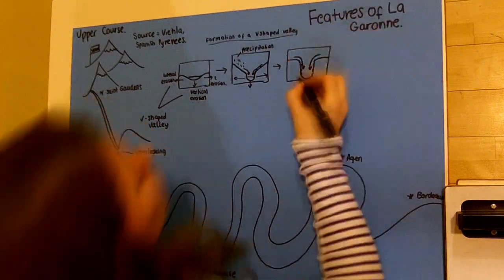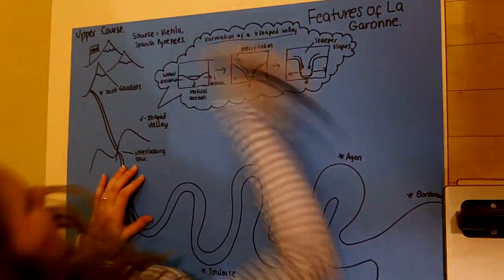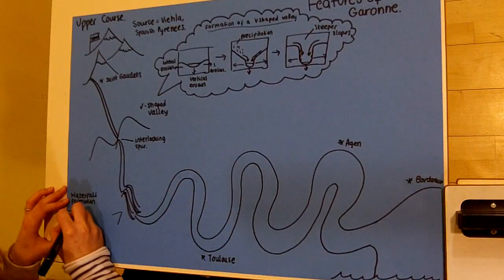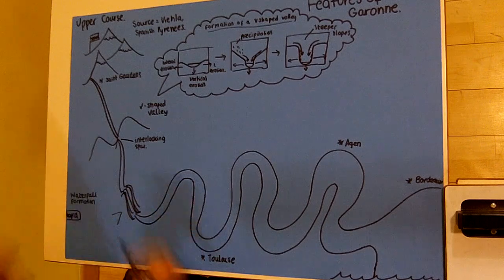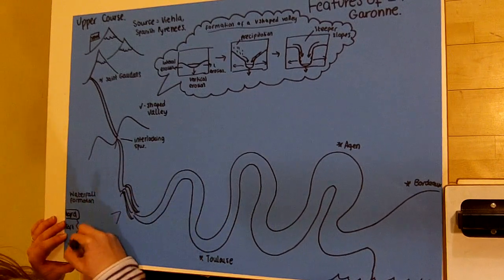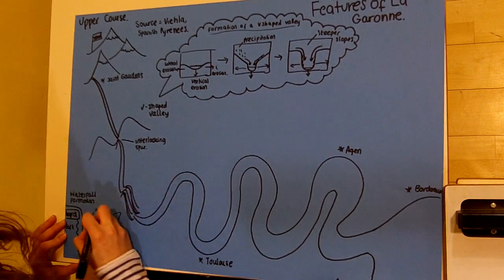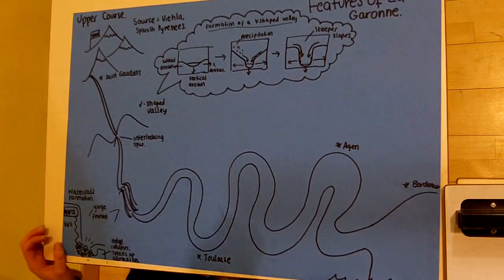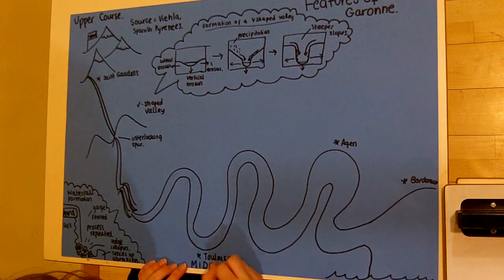Waterfalls are a second feature of the upper or middle course of the river. The presence of hard rock above soft rock is a key component, with undercutting being produced as debris and pebbles erode the river. This is known as abrasion and occurs in the plunge pool of the waterfall. Continued erosion results in the formation of a gorge, with overhanging hard rock eventually breaking off and entering the plunge pool.